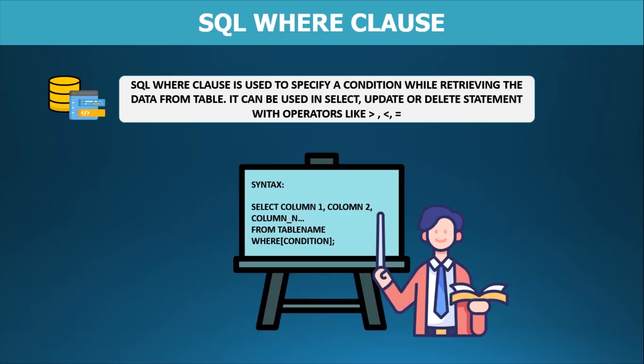Let us now look at the syntax of the WHERE clause. The syntax is: SELECT column1, column2, up to n number of columns FROM table_name WHERE condition. Here, column1 and column2 represent the columns from which we want to fetch data, and the condition represents the required filter to fetch rows based on the requirement. It contains a column name, an operator, and a user-defined value. Comparison and logical operators are also used in this condition.